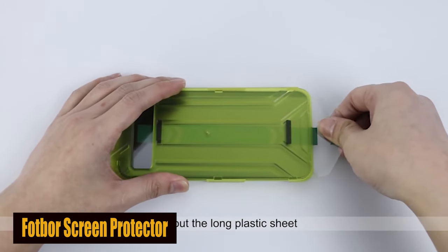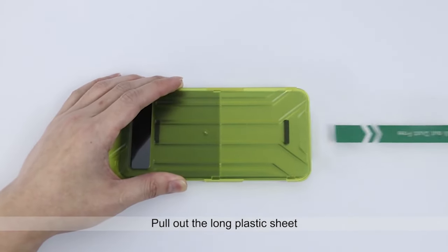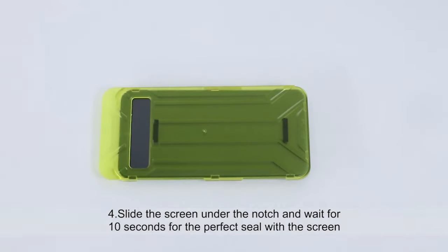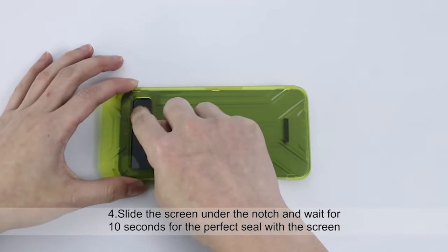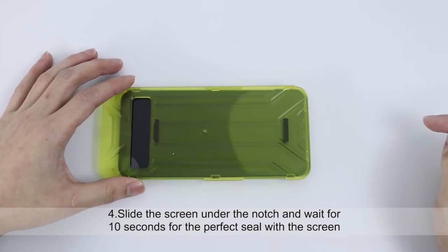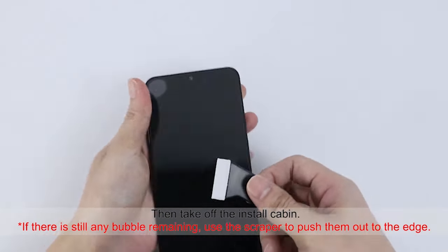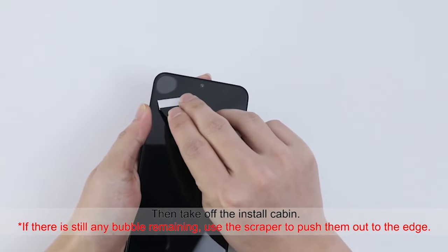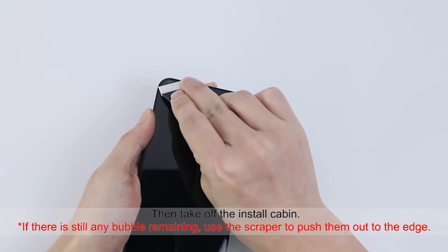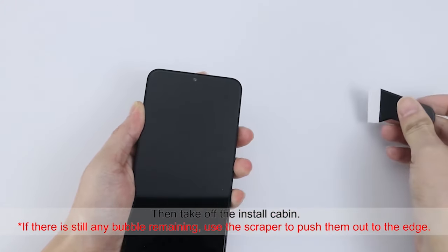Number 1: FOTBOR Screen Protector. This screen protector is designed with the highest level of durability without compromising on clarity. The thinnest design in the industry ensures seamless fingerprint unlocking and an enhanced touch sensitivity experience. Whether you're typing, gaming, browsing, or multitasking, the Super Thin Glass upgrade advances touch responsiveness, allowing you to navigate your device with ease and accuracy.